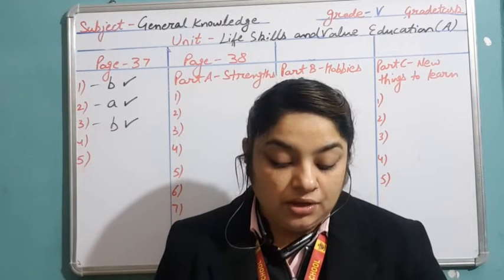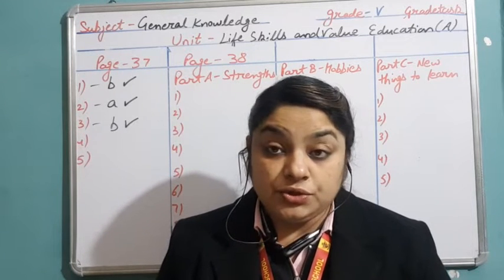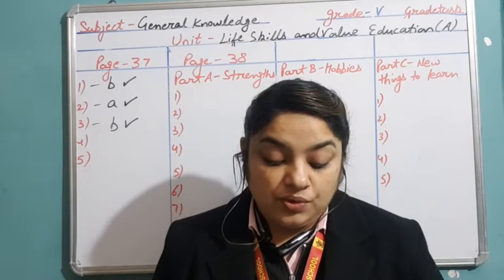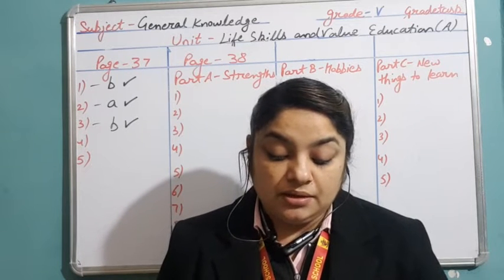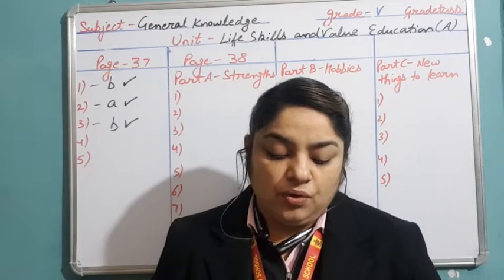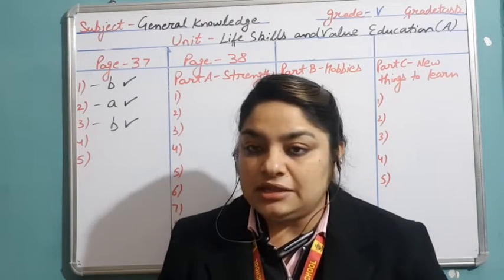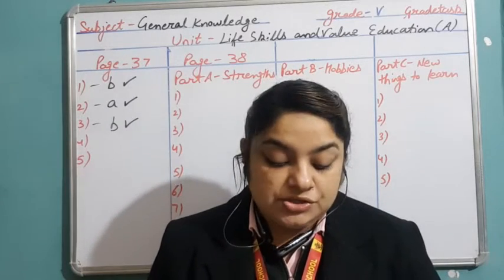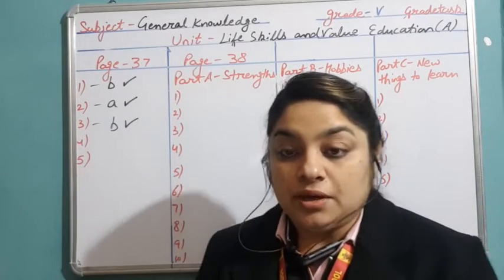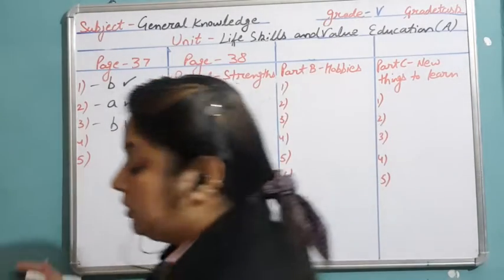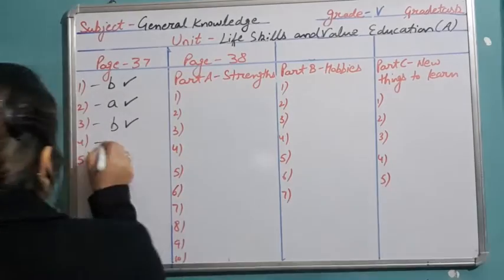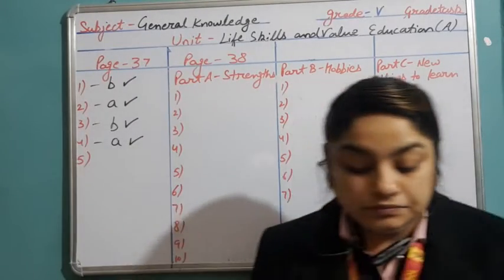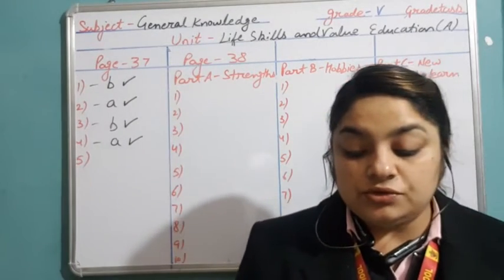Fourth situation: you notice that a student in your school is throwing garbage inside the classroom — that is a very bad habit. What should you do? A — tell him that he should throw it in a bin, or B — just ignore it and say nothing. You should definitely not ignore it; you should tell him to use the bin. The answer is A.